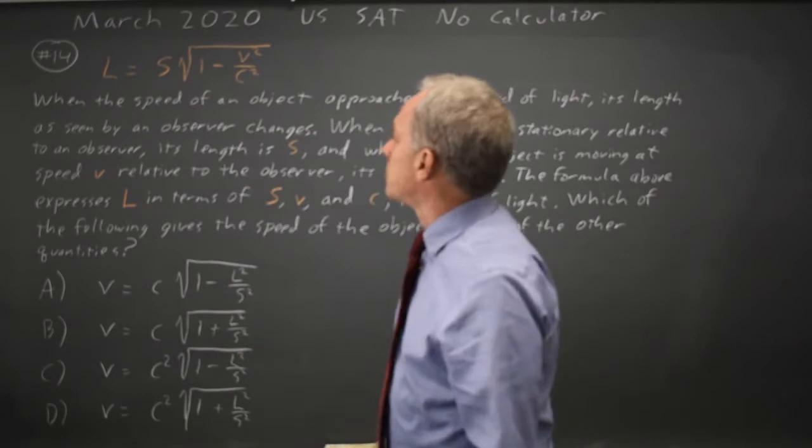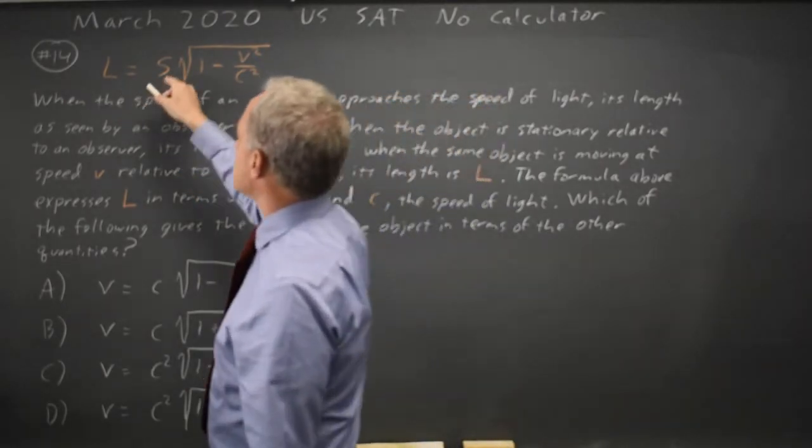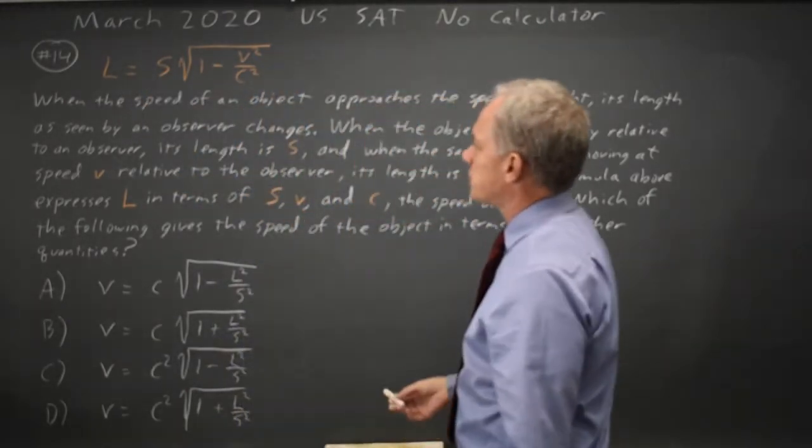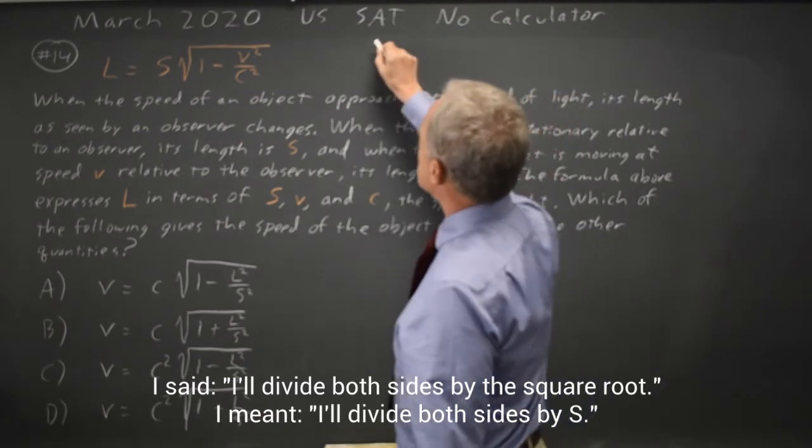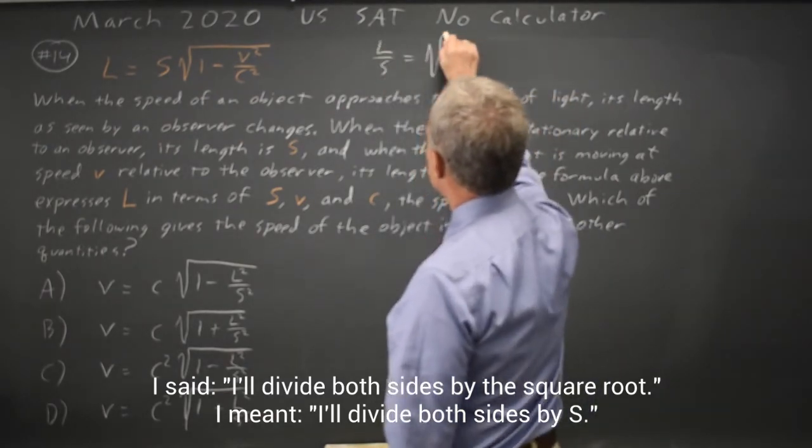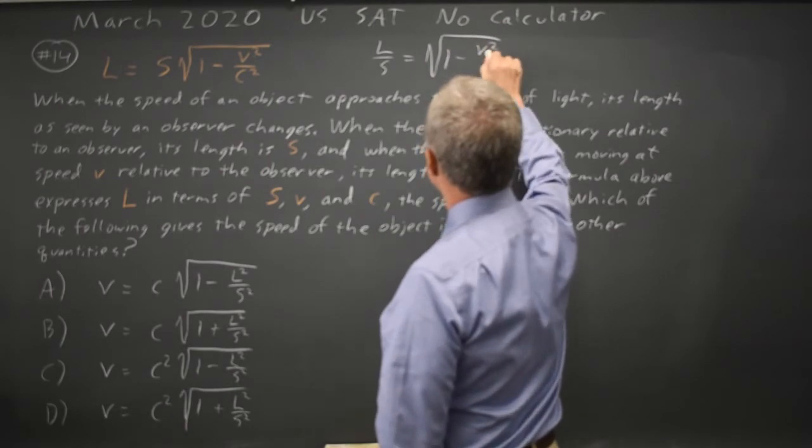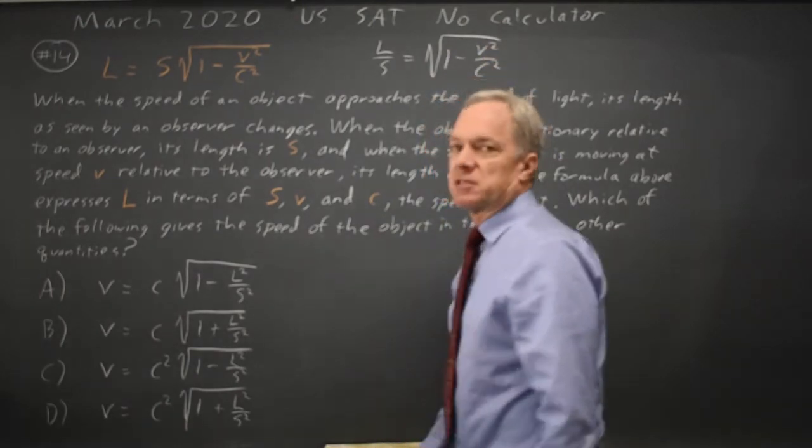So first I'm going to get the square root by itself. Since I have L equals S times the square root, I'll divide both sides by the square root and that gives me L over S equals the square root 1 minus V squared over C squared. And I haven't changed the square root.